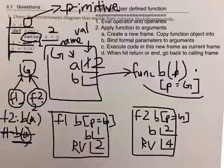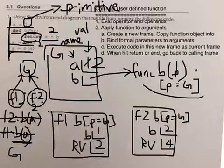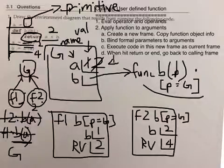So now we've returned 4. This frame is no longer active. So we cross it out and we go back to the global frame. So this expression is 4. And so now we rebind A to 4. And congratulations, you're finished with your first environment diagram.